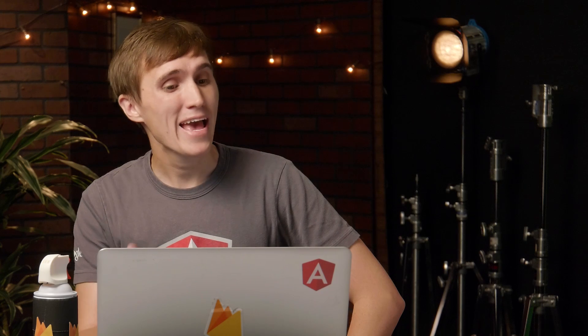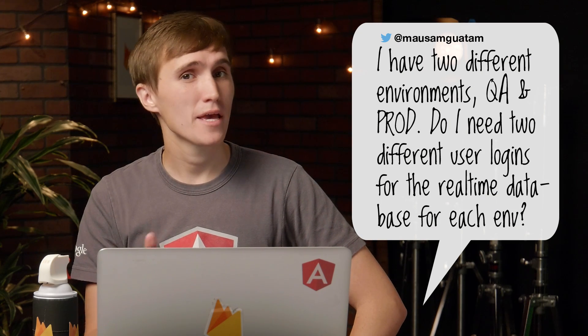This next question comes from Mausum on Twitter. Mausum asks: I have two different environments — QA and prod. Do I need two different user logins for the real-time database for each environment? The main problem here is that you have a lot of QA data or development data alongside your production app, and a lot of times you don't want to pollute the two — you want to keep all that information nicely isolated. And the way you do that is through your build process.